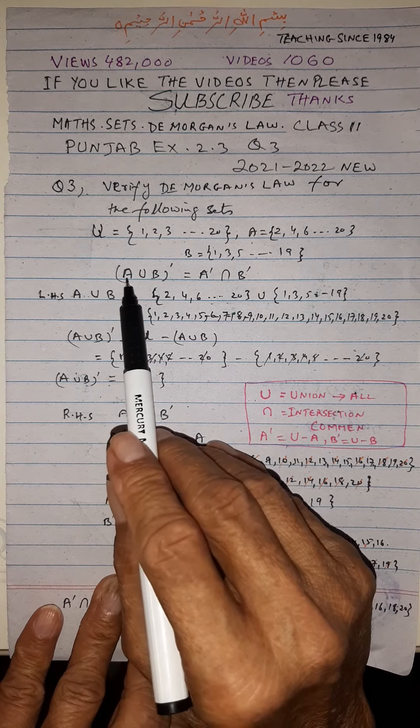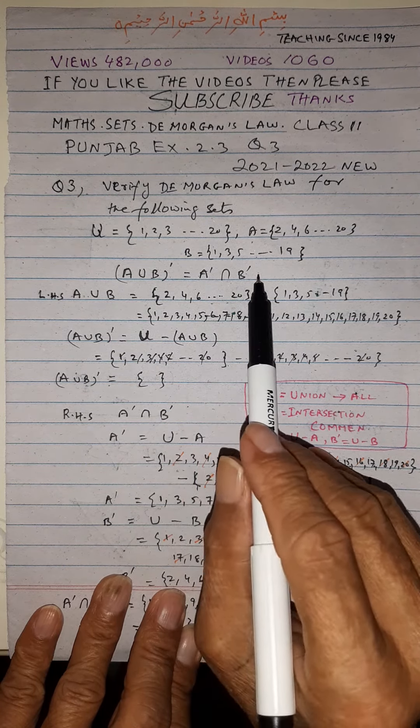And this is De Morgan's Law: A union B prime is equal to A prime intersection B prime.